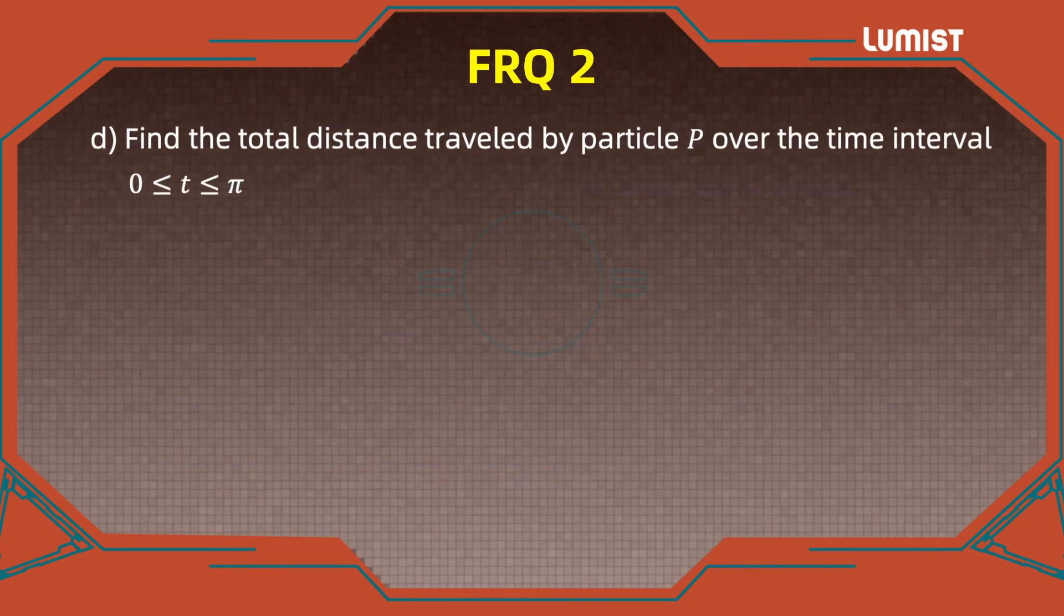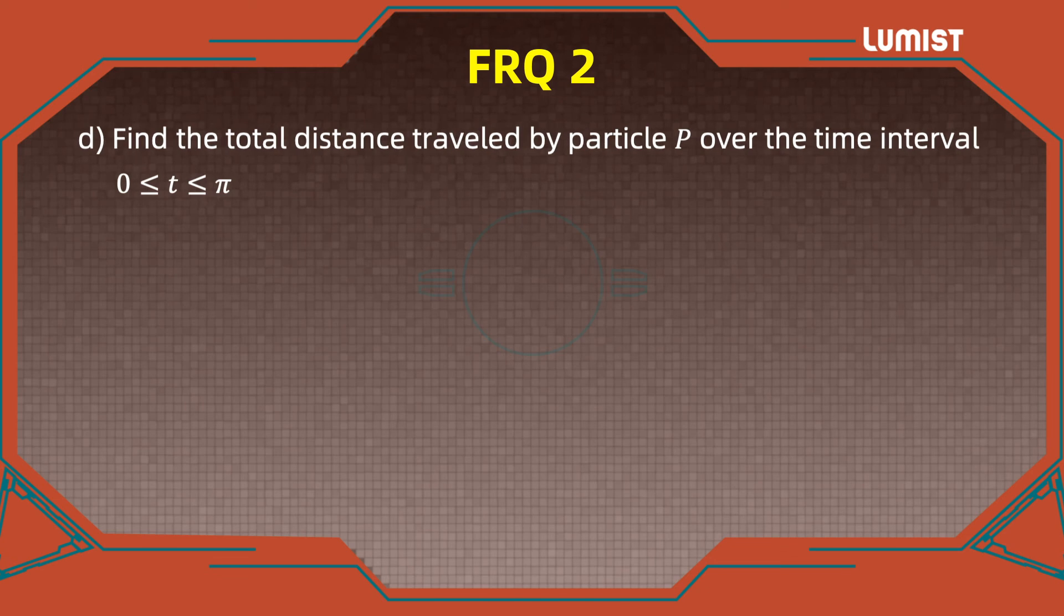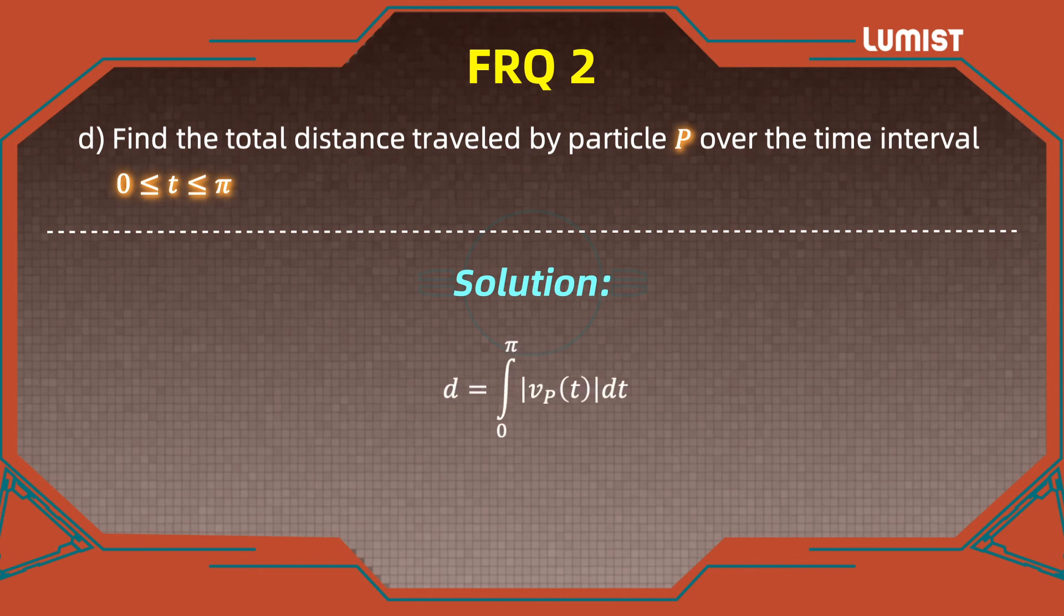Part D asks us to find the total distance traveled by particle P over the interval of time going from 0 to π. For the solution, remember that the total distance traveled is just the integral over the given interval from 0 to π of the absolute values, the magnitude of the velocity, in this case of particle P.